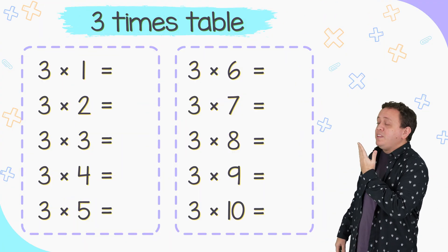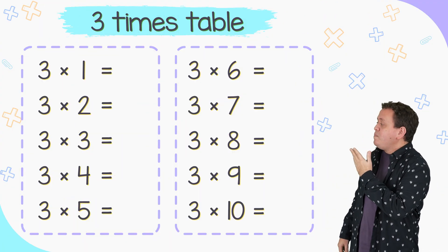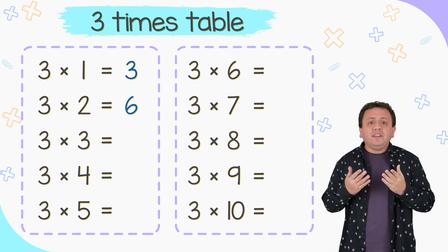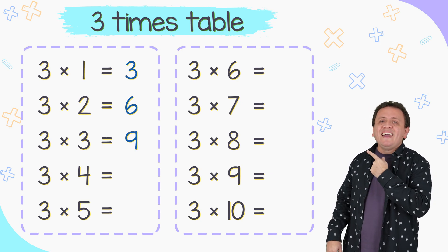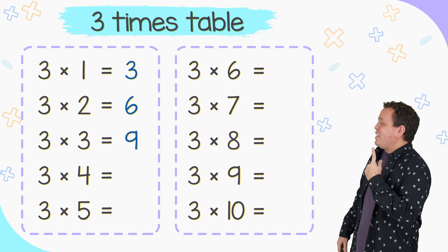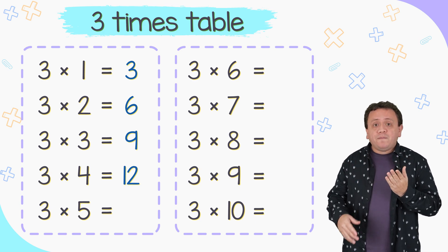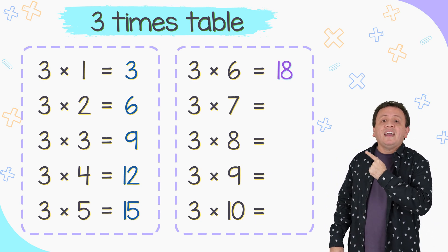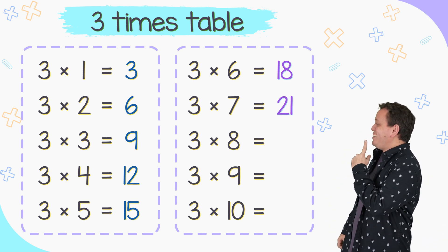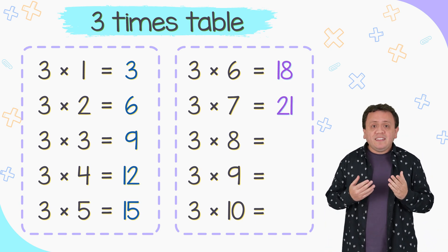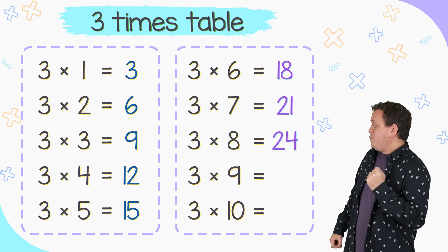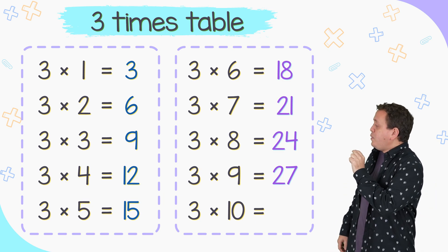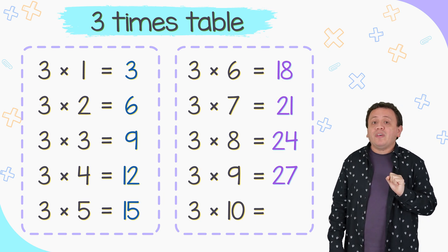And here we have the 3 times table. 3 times 1 equals 3. 3 times 2 equals 6. 3 times 3 equals 9. 3 times 4 equals 12. 3 times 5 equals 15. 3 times 6 equals 18. 3 times 7 equals 21. 3 times 8 equals 24. 3 times 9 is equal to 27. Last one: 3 times 10 is equal to 30.